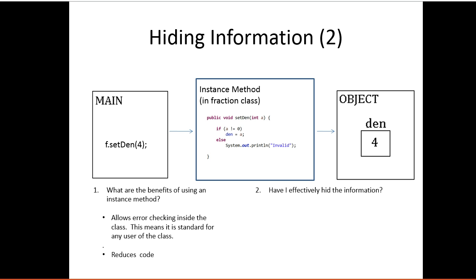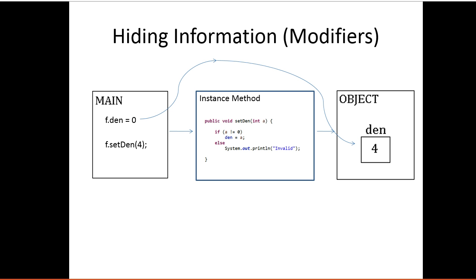So the question now for you is, have I effectively hidden the information? Well, no. I can still do this. And I bypass that instance method. So what we have to do is, we have to find a way of stopping the user from being able to access that field directly using f.den. So we imagine what we put up is a force field around the object. And so if the user tries to change the field, an error occurs.